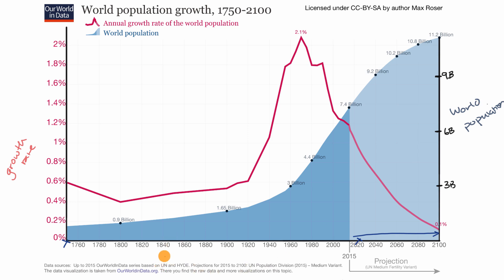What was the world population around 1750? And these are obviously estimates, because you did not have a global census back in 1750 — it was around 700 or 800 million people. That's not a lot larger than the number of people at the time of Jesus, which is also the time of the Roman Empire and Han China, where it's estimated that around 2,000 years ago the world population was around 300 million people.